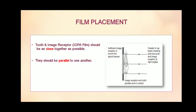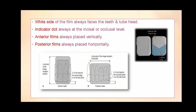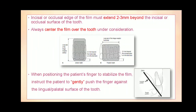After film stabilization comes film placement. The tooth and image receptor should be as close together as possible and parallel to one another. The white side of the film always faces the teeth and tube head. The indicator dot is always at the incisal or occlusal level. Anterior films are always placed vertically and posterior films are always placed horizontally. The incisal or occlusal edge of the film must extend 2-3 mm beyond the incisal or occlusal surface of the teeth. Always center the film over the tooth of interest, and when positioning the patient's finger to stabilize the film, instruct the patient to gently push the finger against the lingual or palatal surface of the tooth.